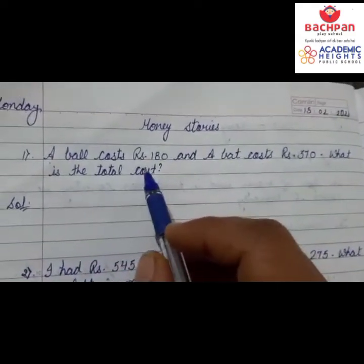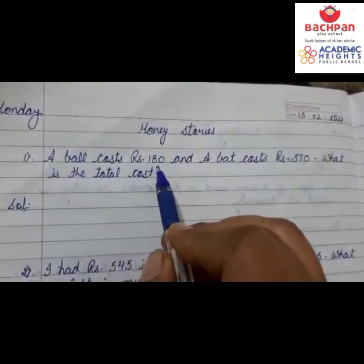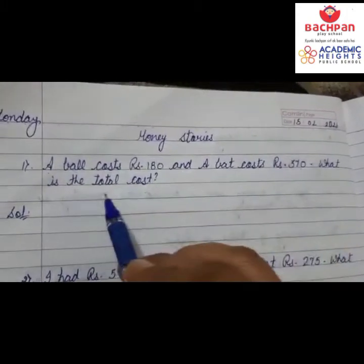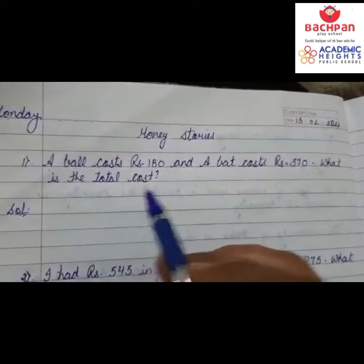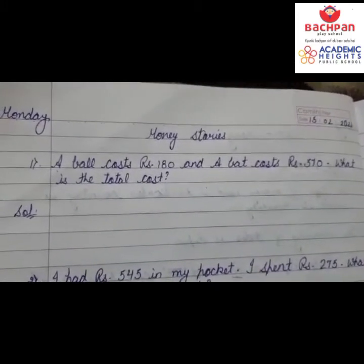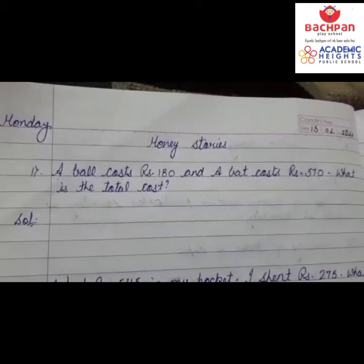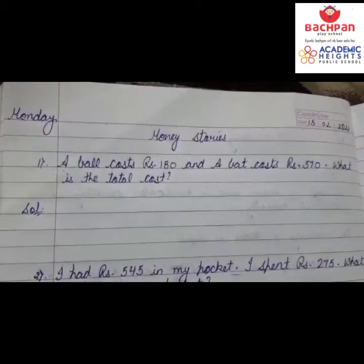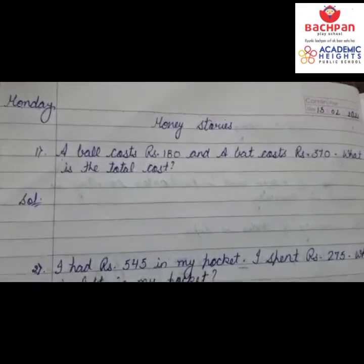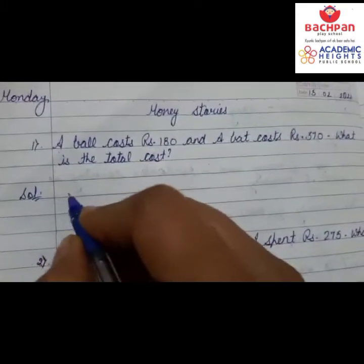First, read the question carefully. A ball costs rupees 180 and a bat costs rupees 370. What is the total cost? The ball's cost is given, the bat's cost is given, and we need to find the total cost of both. So in this question, we will do addition.